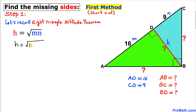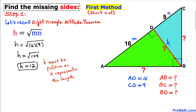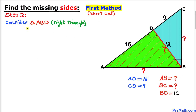In our case m is 16 and n is 9, so h equals the square root of 16 times 9, which is the square root of 144. h turns out to be positive 12 — it must be positive since it represents a length. Thus our length BD turns out to be 12 units.